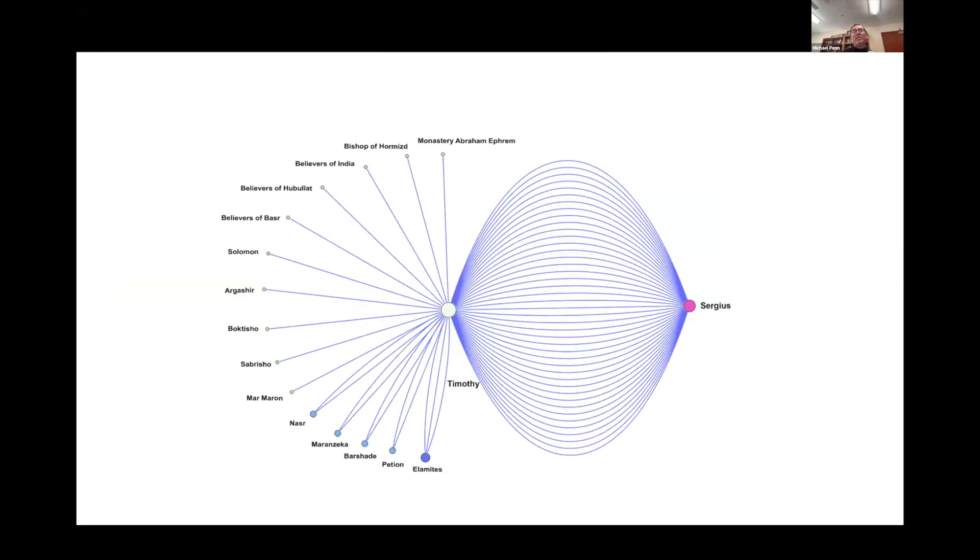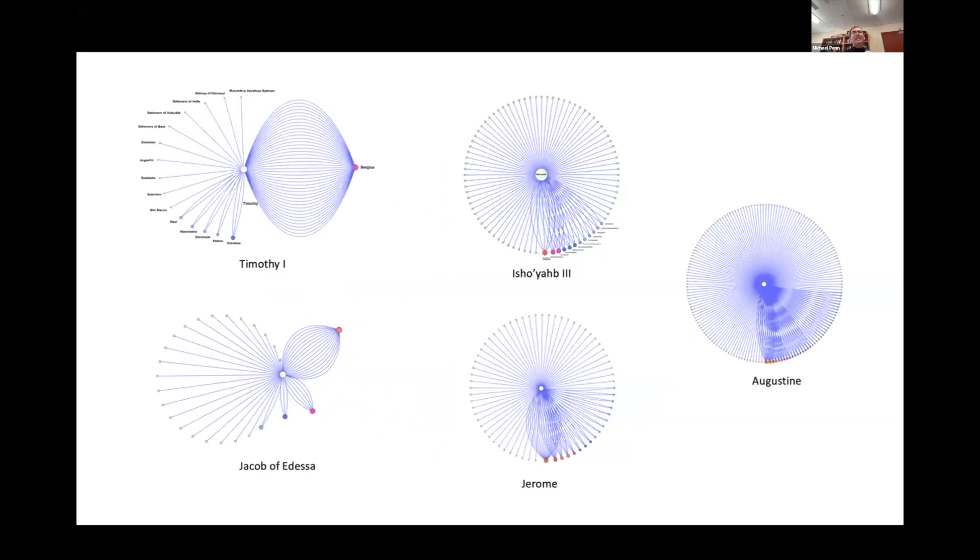Something similar to what you see here, where each letter in this case that we have of Timothy is as a blue line, each recipient a dot. As you can tell from the visualization, Timothy has a tendency to write most of the letters that survive to his favorite pen pal and childhood friend, Sergius. This misdistribution, that is, most of the letters being to one recipient, becomes even more notable when we use comparative sets.